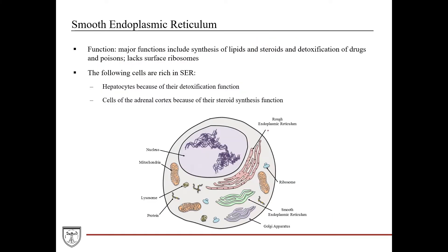The smooth endoplasmic reticulum has two major functions: synthesis of lipids and steroids, and detoxification of drugs and poisons. It lacks those surface ribosomes, which is visually why it's called smooth endoplasmic reticulum. It's important to pay attention to which cells are rich in certain types of organelles, as this correlates to the overall function of those cells. These following cells are rich in smooth endoplasmic reticulum.